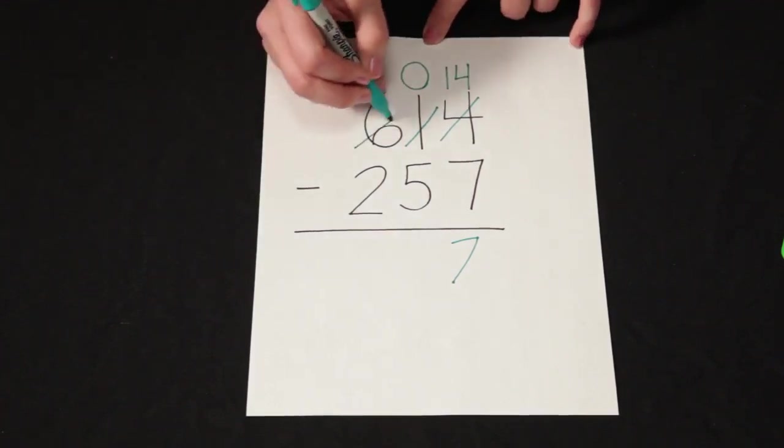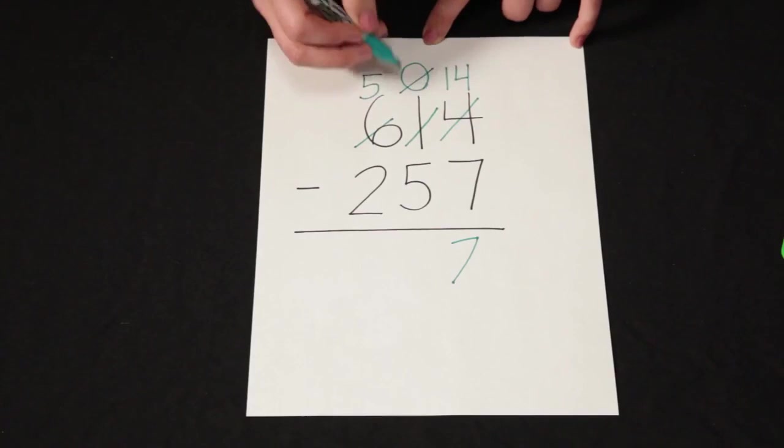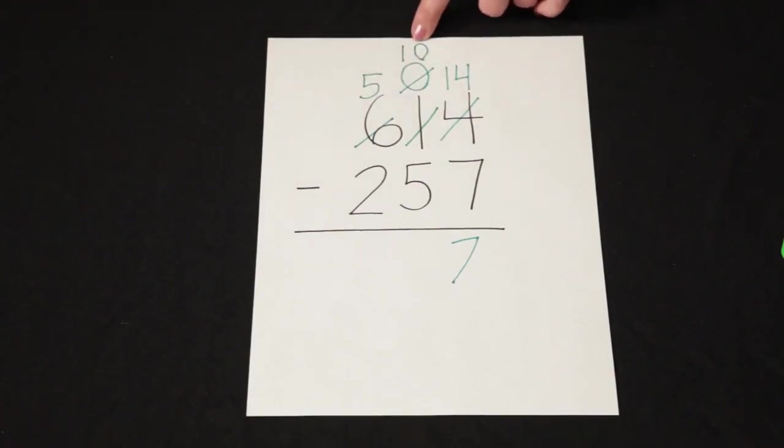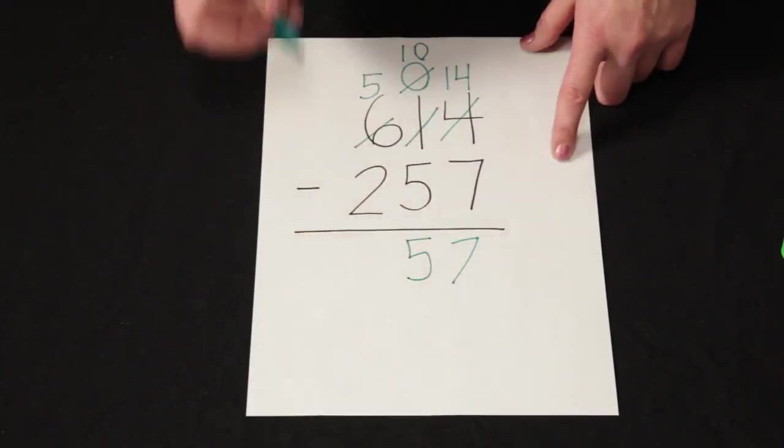So I'm going to regroup 100, which leaves me with 5 hundreds, and I'm going to regroup those 100s for 10 tens. So now I have 10 minus 5. 10 minus 5 is 5.